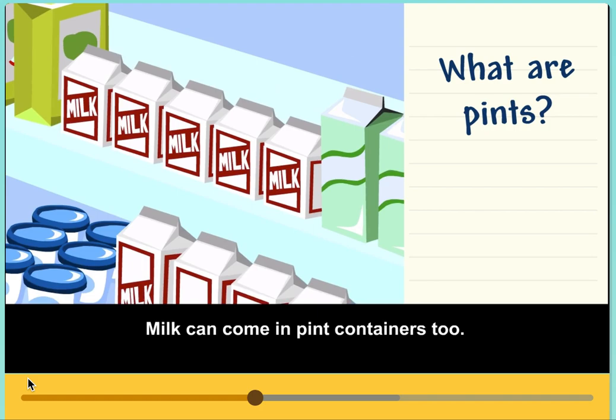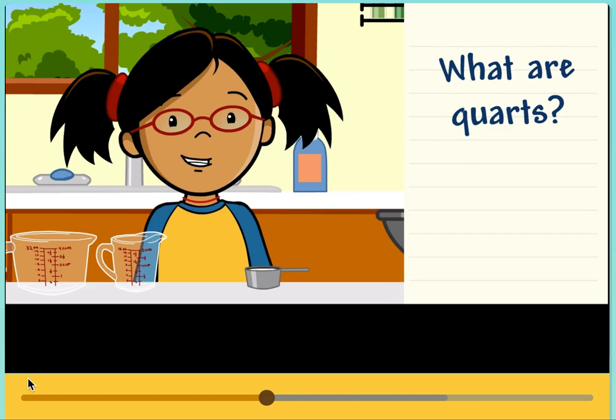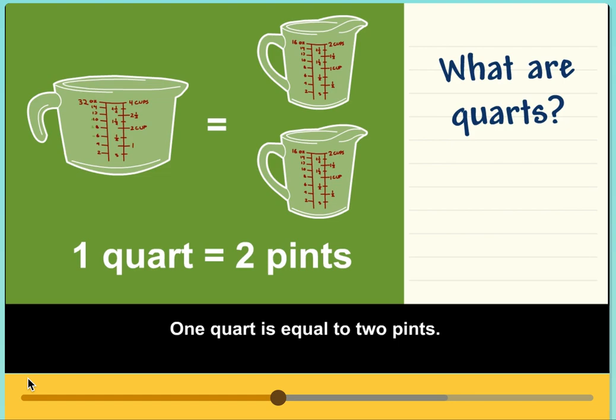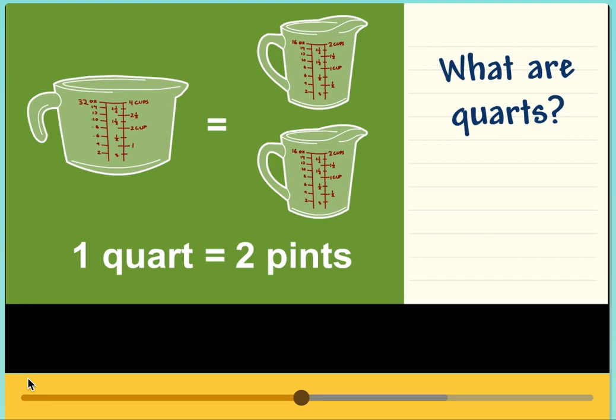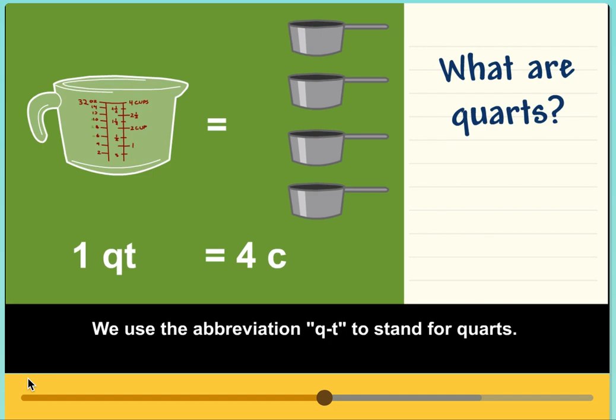What are quarts? A quart is bigger than a pint or a cup. One quart is equal to two pints. Since one pint is equal to two cups, one quart must be equal to four cups. We use the abbreviation QT to stand for quarts.